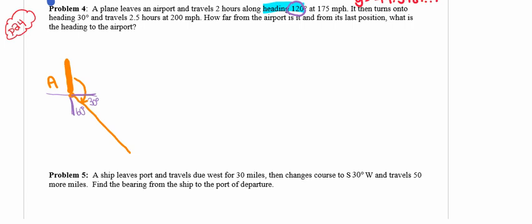There's what we've got going on in the very first leg of this journey. At this point, we're going to take our plane and turn onto a heading of 30 degrees. From the north, we are now going to take a turn that's 30 degrees. So that little angle in there is 30, which again makes that angle 60. We're going to go for two and a half hours at a faster rate, so I'm going to draw that second leg of the journey longer than the first. Then at that point, we're going to stop and I'm going to label this P for plane.